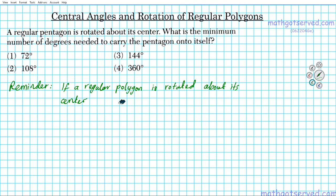If a regular polygon is rotated about its center by the measure of its central angle, it is carried onto itself.